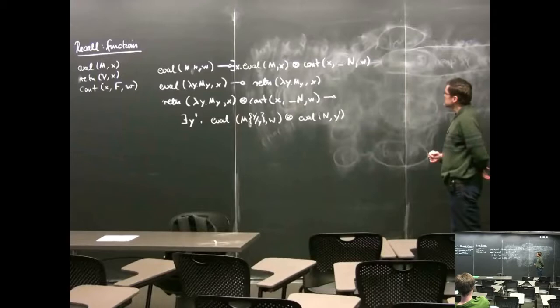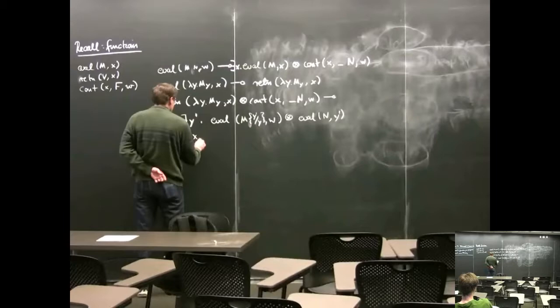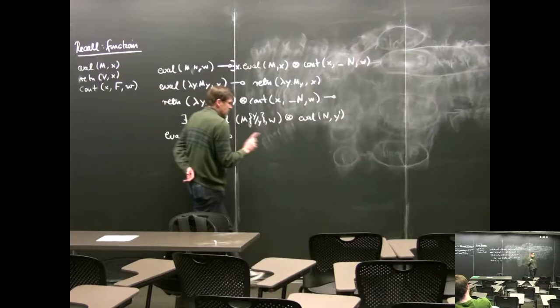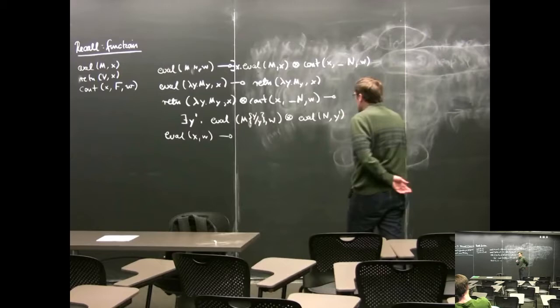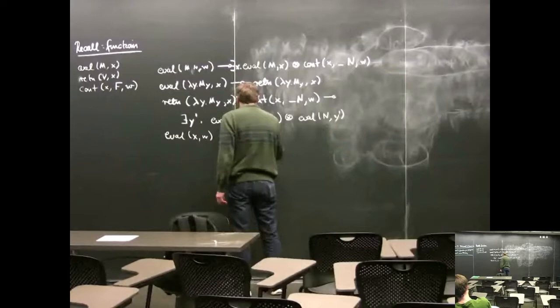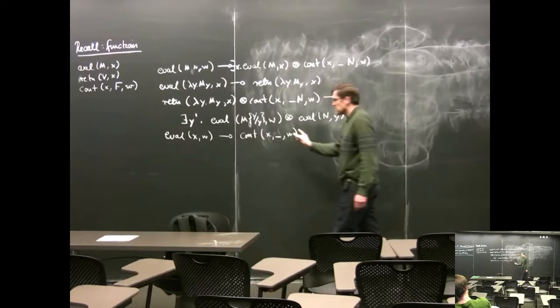Do we need anything else? We need evaluation of a variable — when we come to a variable, we need to synchronize on that. In the pi calculus, there was forwarding: forwarding from X to W, because we tied those two together. And we interpret that here as a continuation that does nothing interesting with what it gets and returns its result to W.